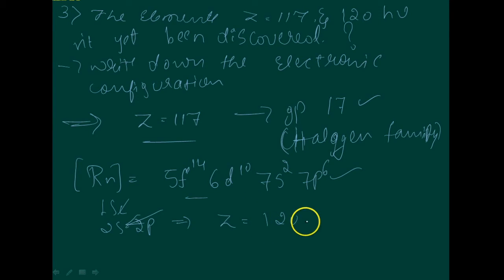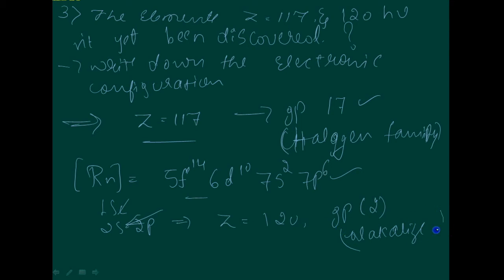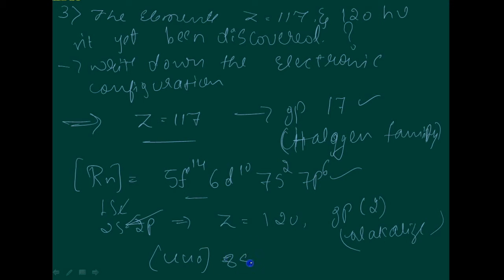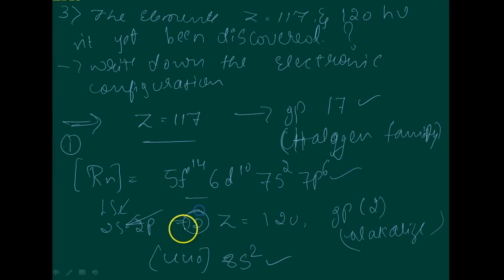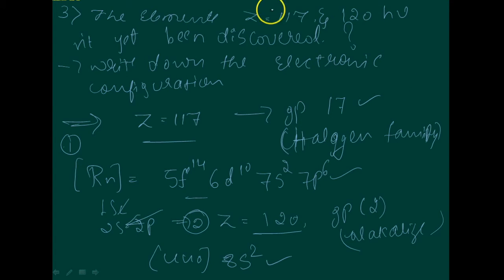The element with Z=120 will be placed in group 2, which is the alkaline earth metals. The electronic configuration is 8s². So these are the elements Z=117 and Z=120 — their family placements and electronic configurations.